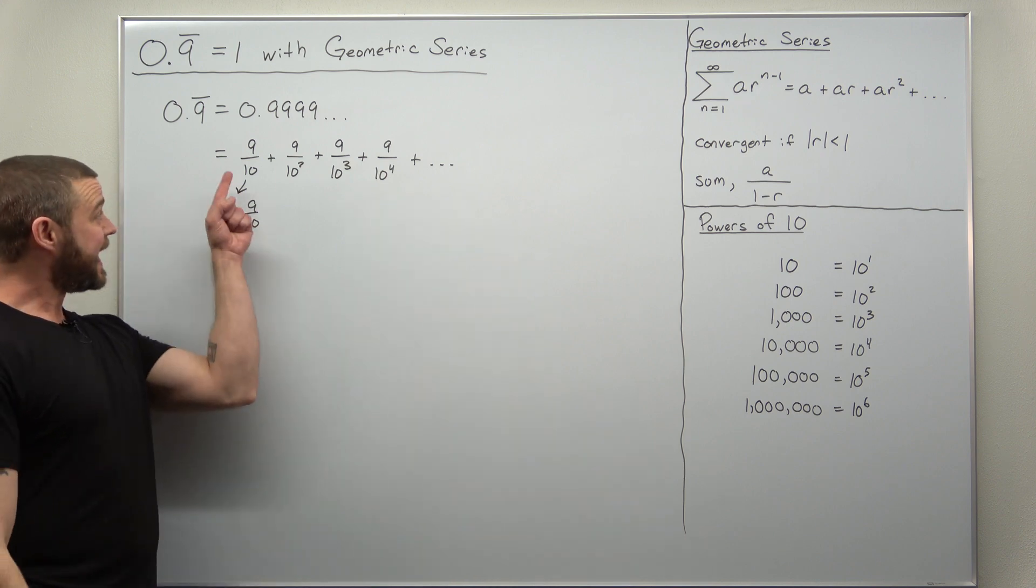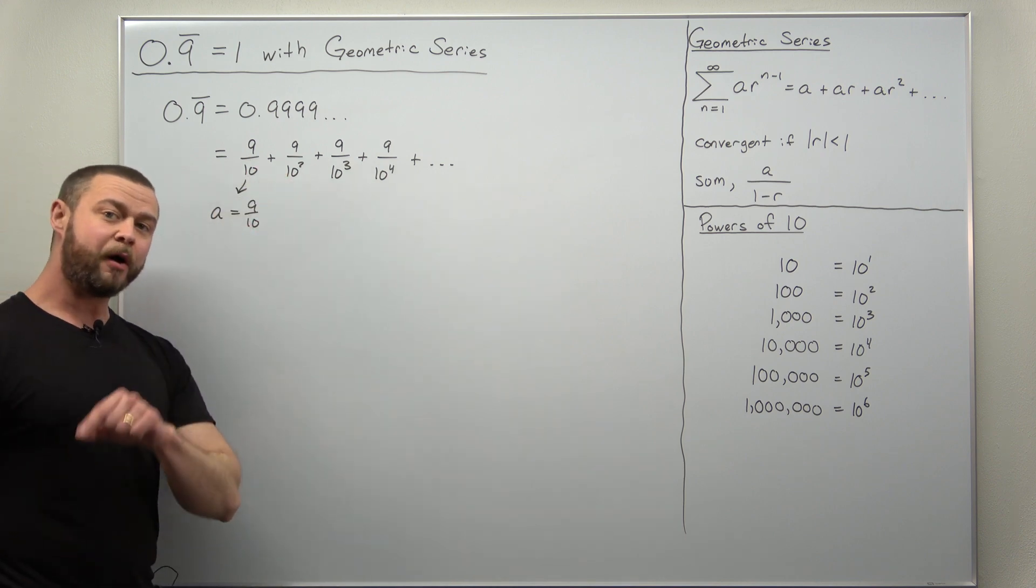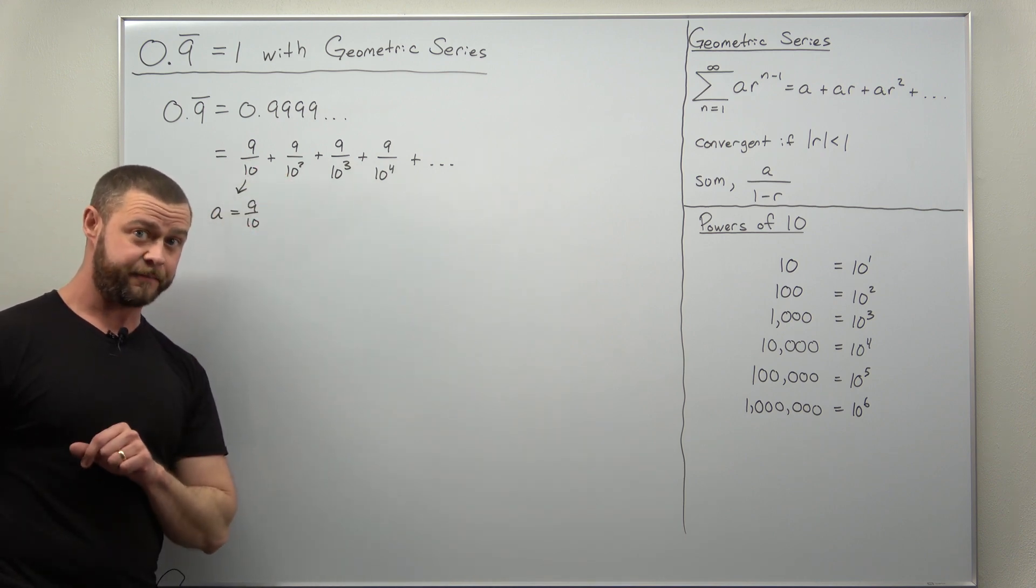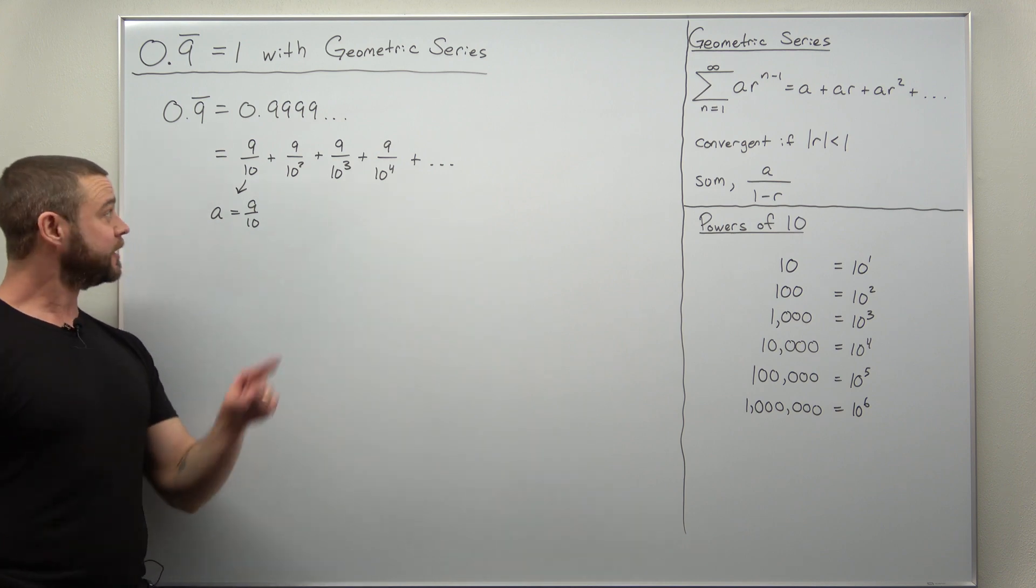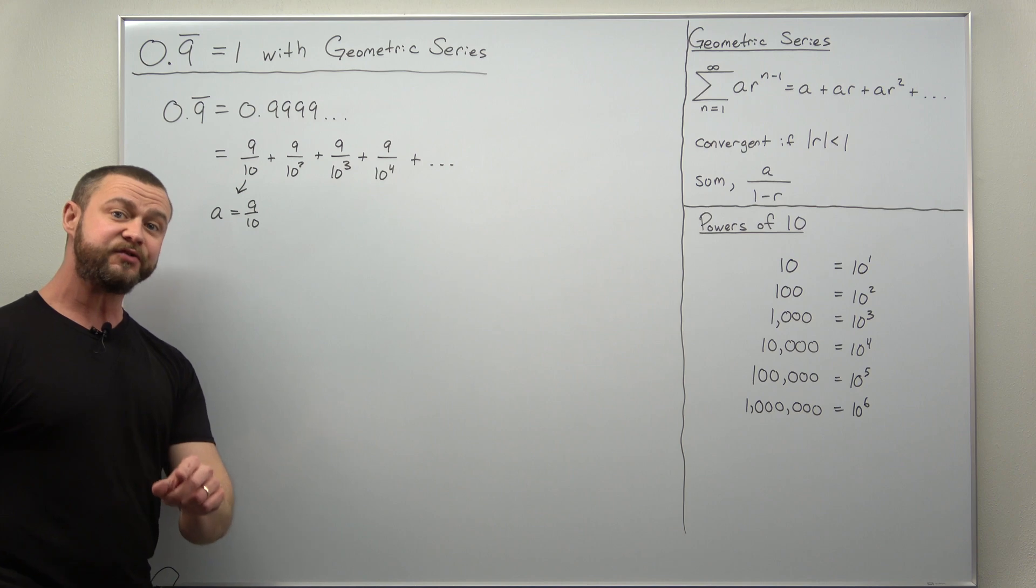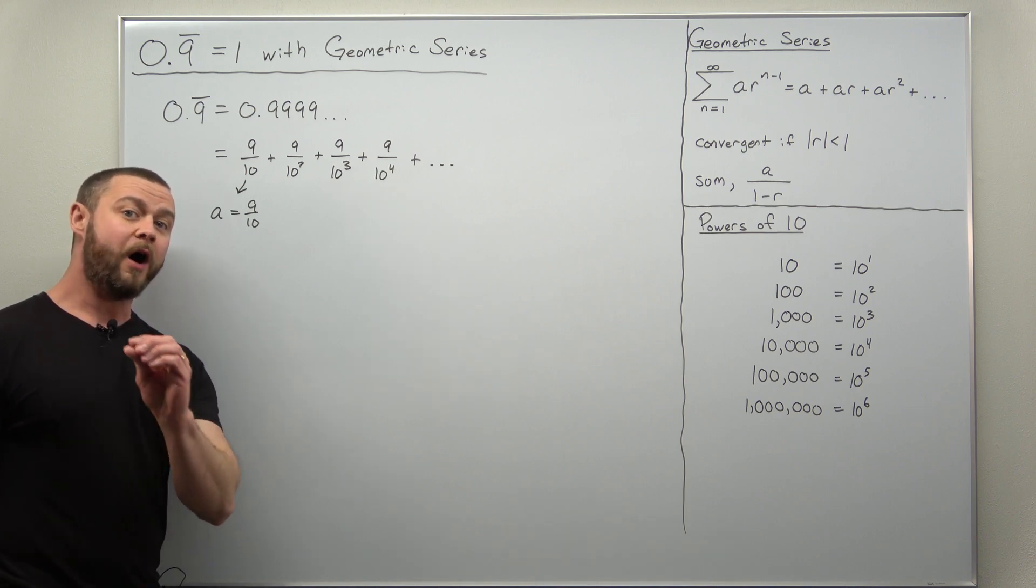And if you take a look at each term, it's getting multiplied by 1 over 10, an additional power of 10 in your denominator. You could say this differently as each term divided by the previous term will come out to be 1 tenth.